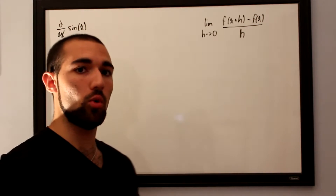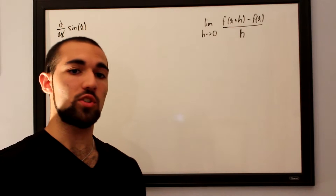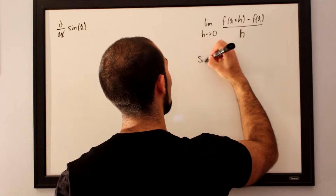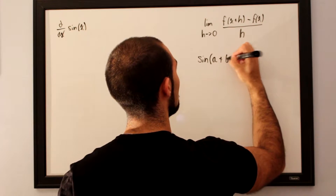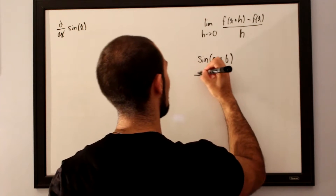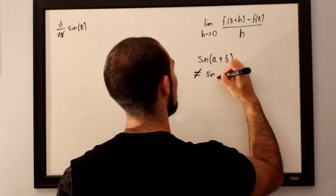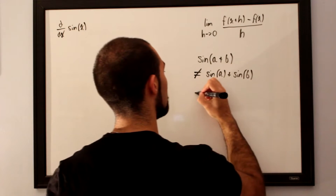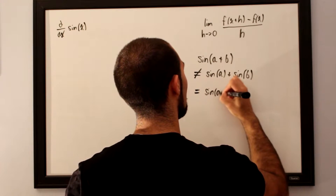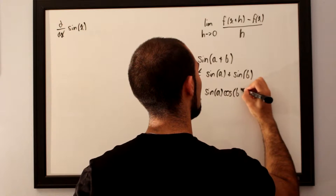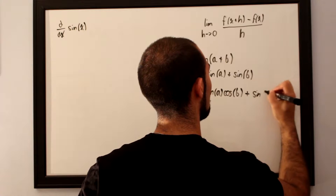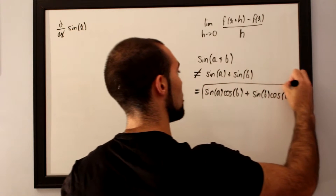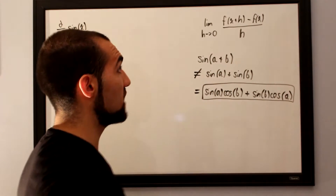Something we need to know in order to evaluate this derivative is how to add up sines. Whenever you have sine of a plus b, it is not simply equal to sine of a plus sine of b. Rather, it equals sine of a cosine of b plus sine of b cosine of a. It's a little messy, but this is something you should be familiar with from a basic algebra class.